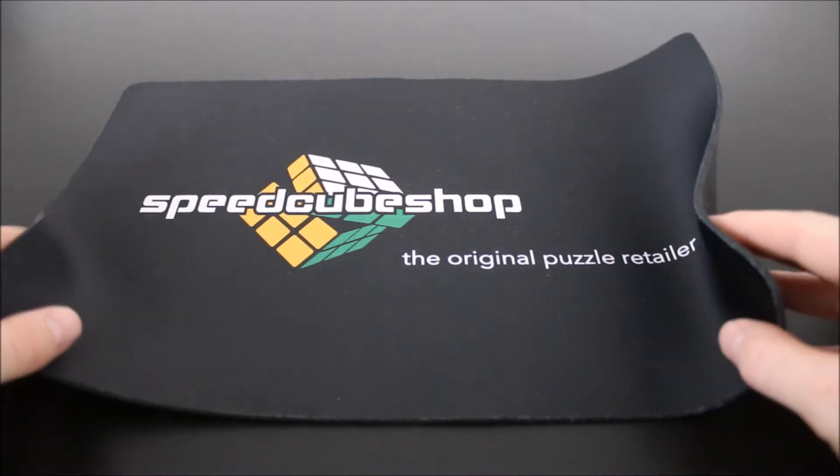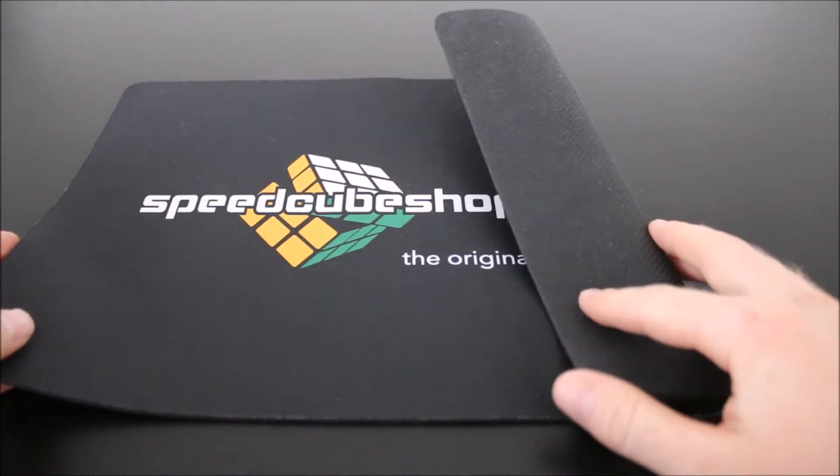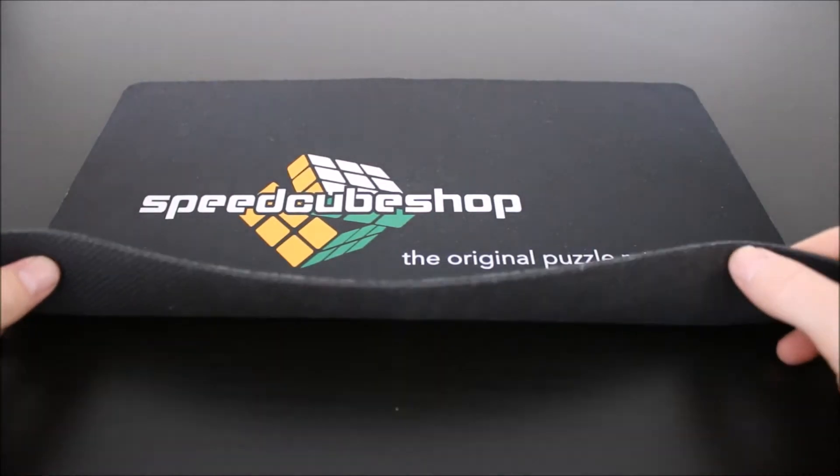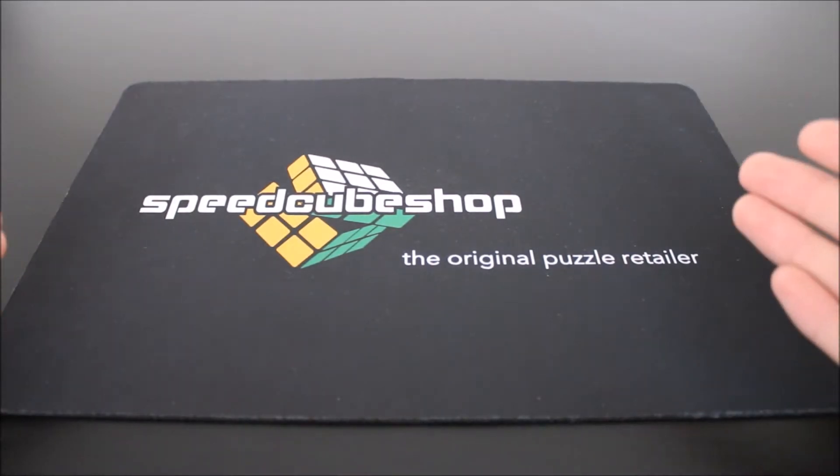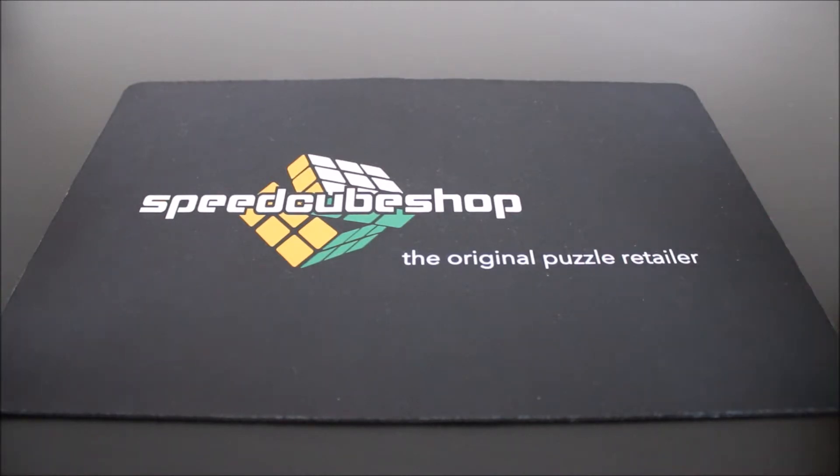The first thing is going to be this Speedcubing mat. It's really high quality, kind of feels like a computer mouse trackpad. And I'll probably be using this in some of my videos with a little bit smaller puzzles, but today I've got something a little bit bigger.